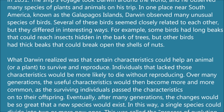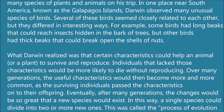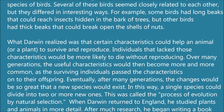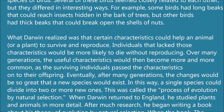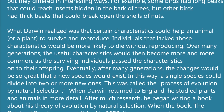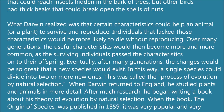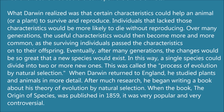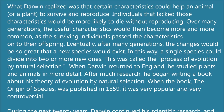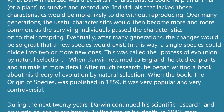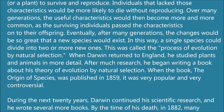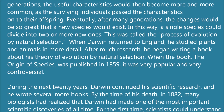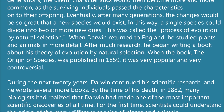What Darwin realized was that certain characteristics could help an animal or a plant to survive and reproduce. Individuals that lacked those characteristics would become more likely to die without reproducing. Over many generations, the useful characteristics would then become more and more common as the surviving individuals pass the characteristics on to their offspring. Eventually, after many generations, the changes would be so great that a new species would exist. In this way, a single species could divide into two or more new ones. This was called the process of evolution by natural selection.